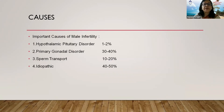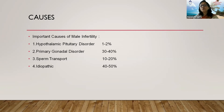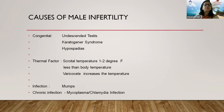In terms of percentages, hypothalamic-pituitary disorders account for about 1 to 2 percent of male infertility; primary gonadal disorder or testicular failure accounts for 30 to 40 percent; transport difficulties for 10 to 20 percent; and idiopathic causes — where no cause is found — account for 40 to 50 percent. Congenital factors include undescended testes and related conditions.